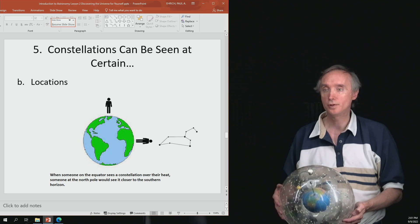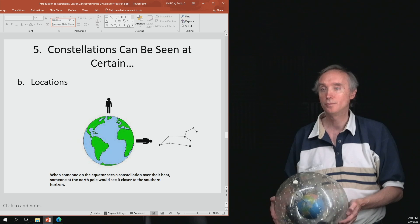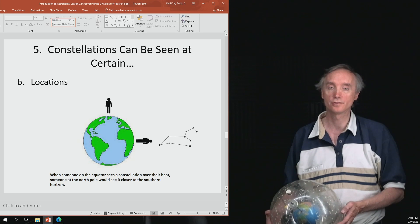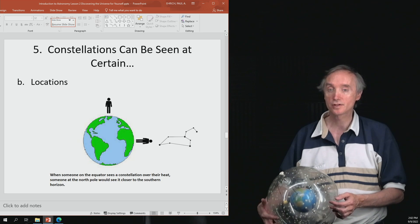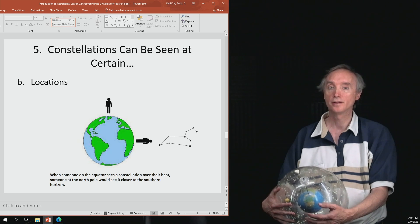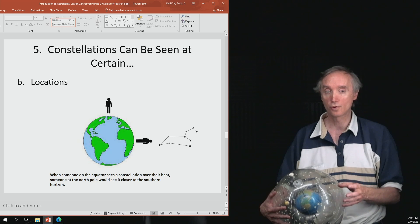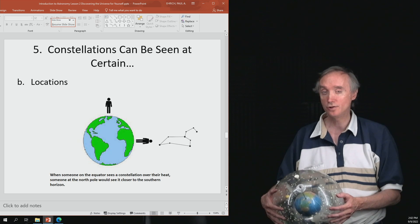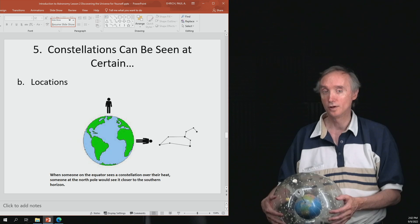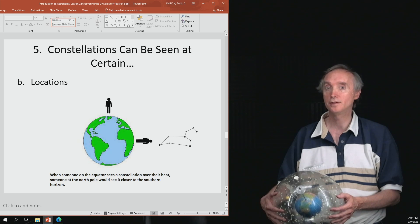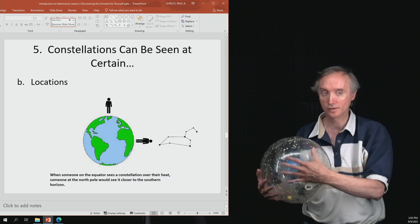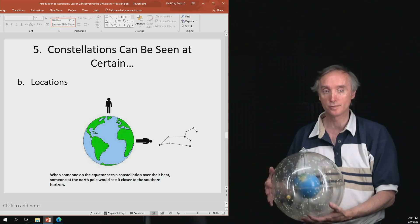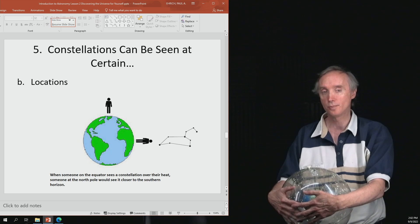Constellations appear to be in certain locations because of where you're at on the Earth's surface, what latitude you're looking at. Some constellations cannot be seen at all. Let's say again that you're up there at the North Pole and you're looking for the Southern Cross. Well, the Southern Cross is in the south, in the southern hemisphere. It's one of these constellations down here in the southern hemisphere. You wouldn't be able to see it from the North Pole because it would be below the southern horizon.